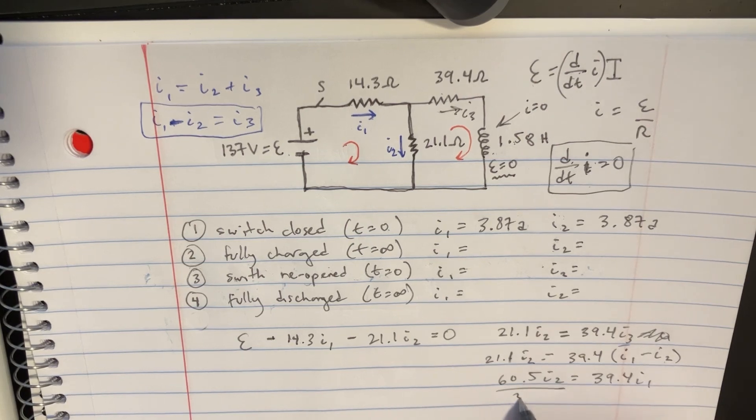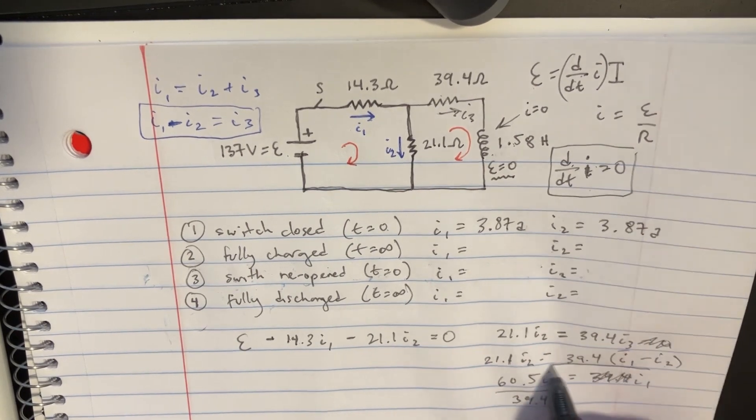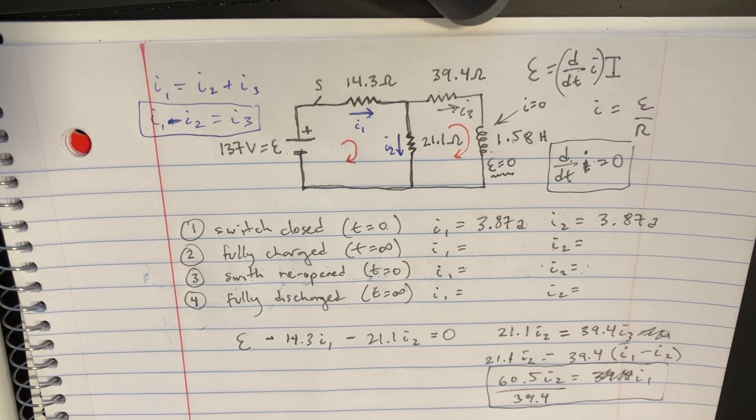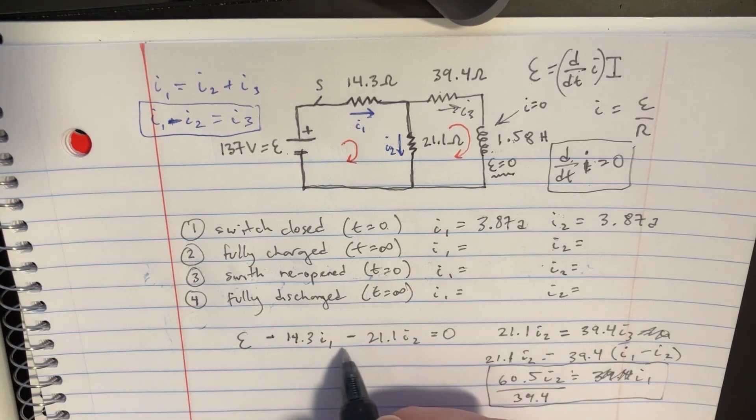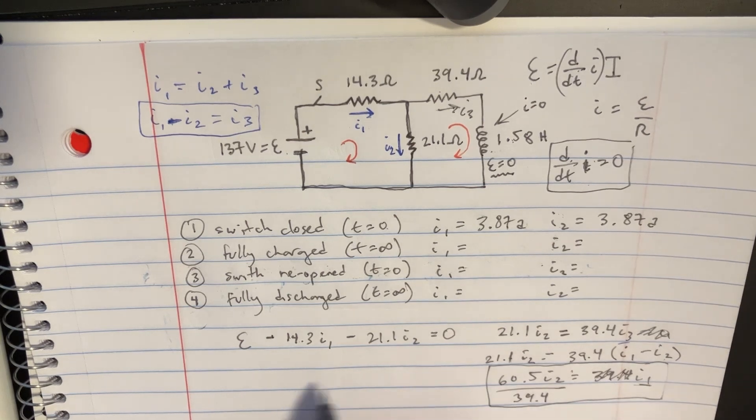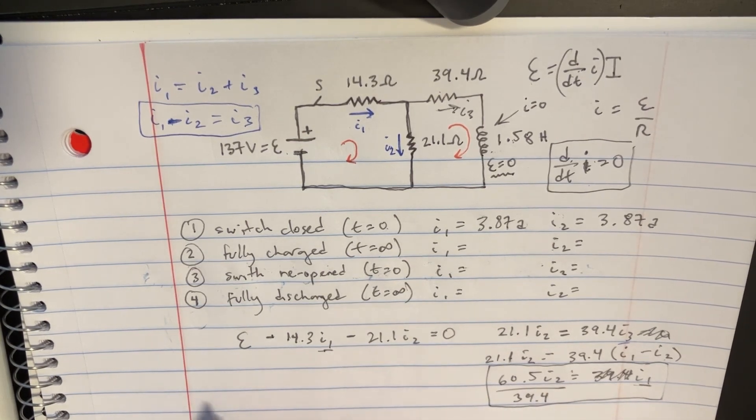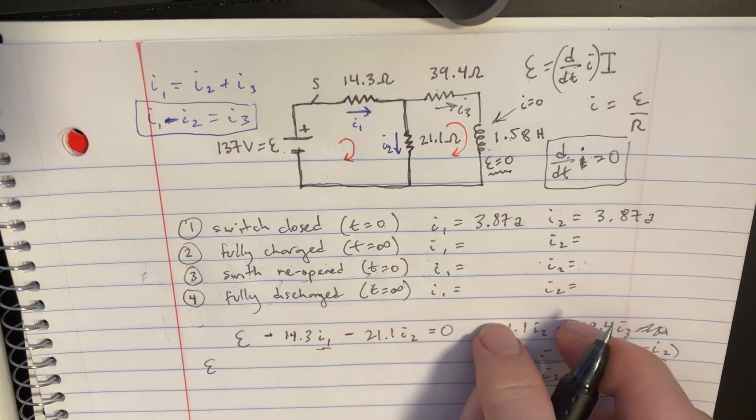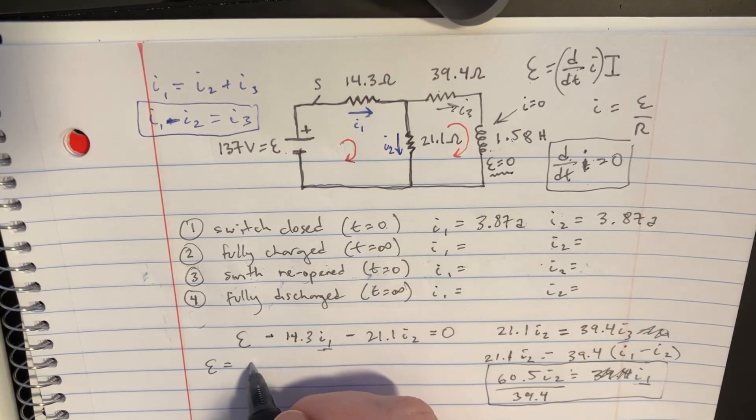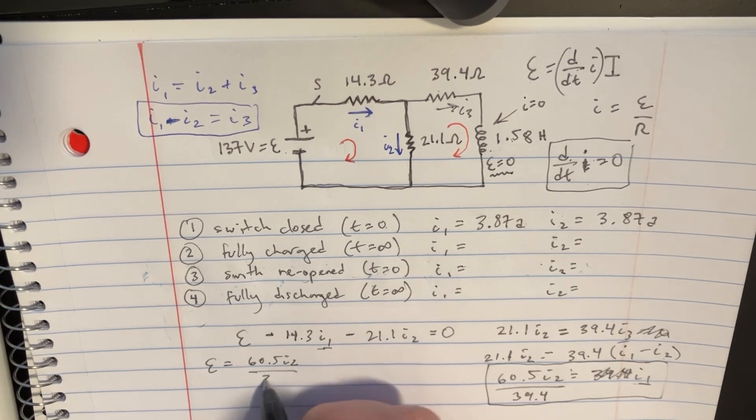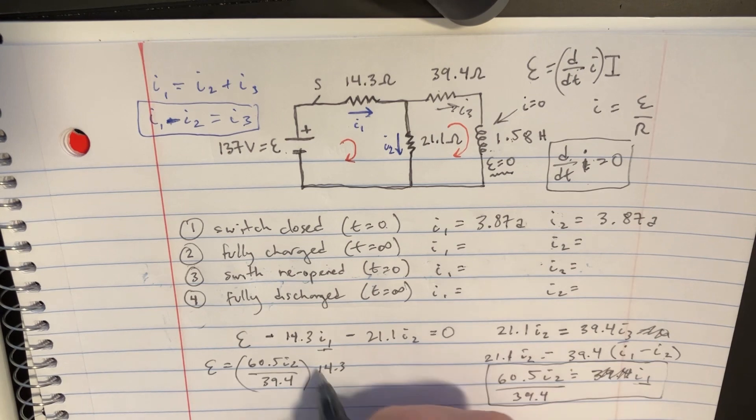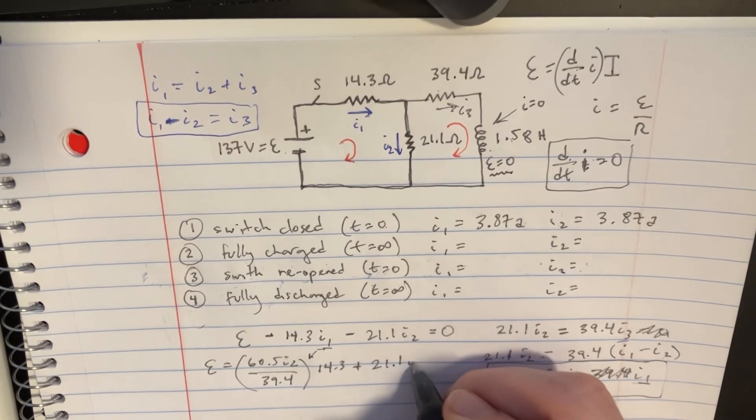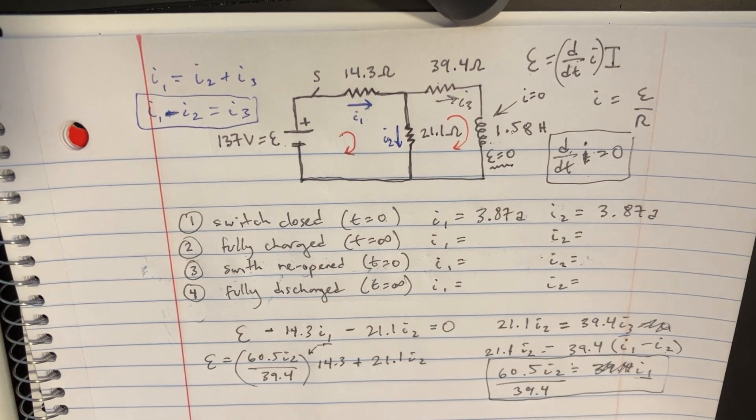And I can just kind of divide this to be able to answer the I1 question. We don't really know what I2 is yet, so I can't answer that whole right yet. But let's head over here. Because I can say that I1 is equal to all this, right? So I'll just put epsilon. And I guess I'll just move all this to the other side. So that's going to be equal to 60.5 I2 divided by 39.4 times 14.3. That's I1 right there. And then this will be plus whatever is left over here, 21.1 I2. So now I can combine those together and actually calculate for I2.